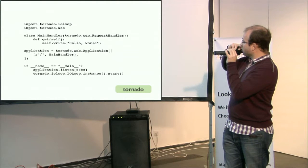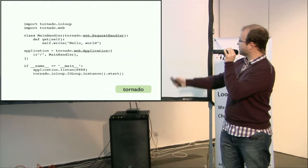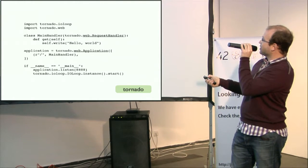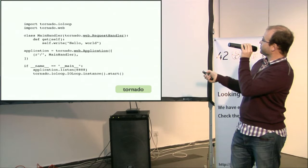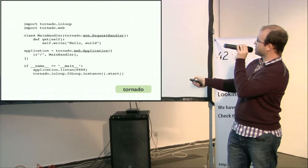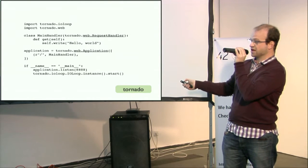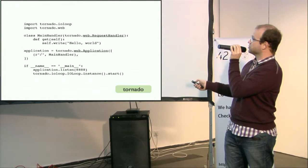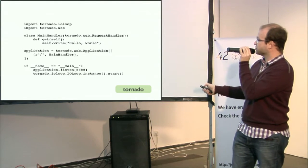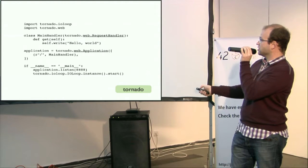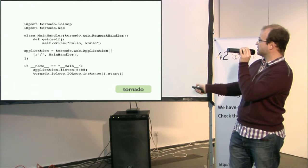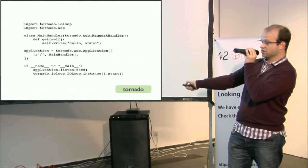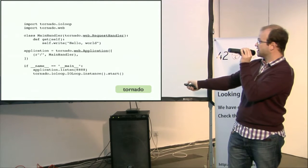This is a simple hello world of Tornado. You have a main handler here, which is a GET function that will react on GET requests on the web, and just sends back a hello world. You can see it starts the event loop and just waits for any events.